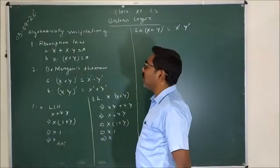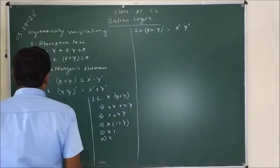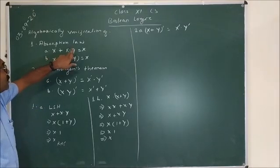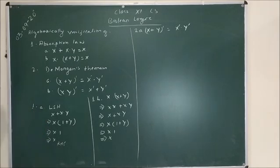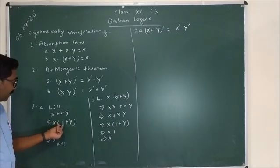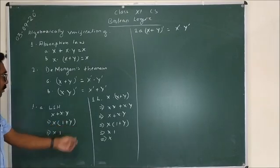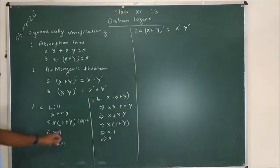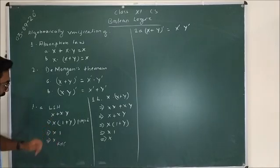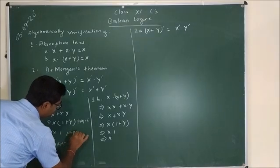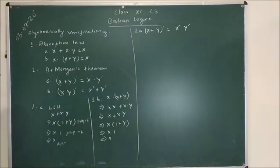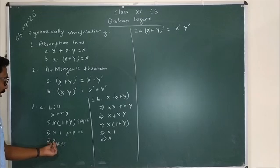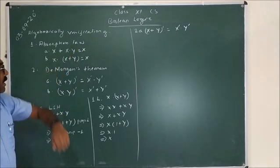The first law, Absorption Law, is very simple to prove. Taking the left hand side, that is x plus x·y, and taking common x, we have x·(1 plus y). Now applying properties of 1, since 1 plus y is equal to 1, the expression becomes x·1. Again using properties of 1, x·1 is equal to x, which is the right hand side value.